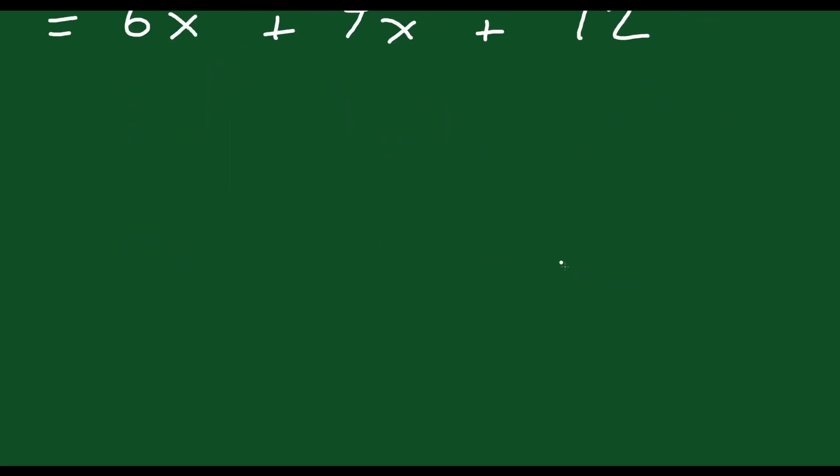Let's do one more to make sure we're comfortable with this. Let's say we have (1/2)a times (4a² plus 3a minus 2b plus 6b²).